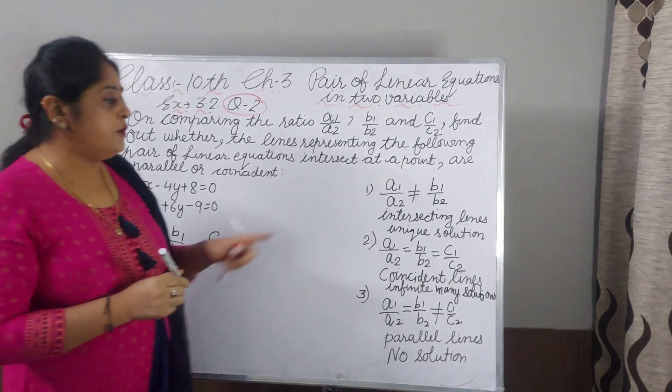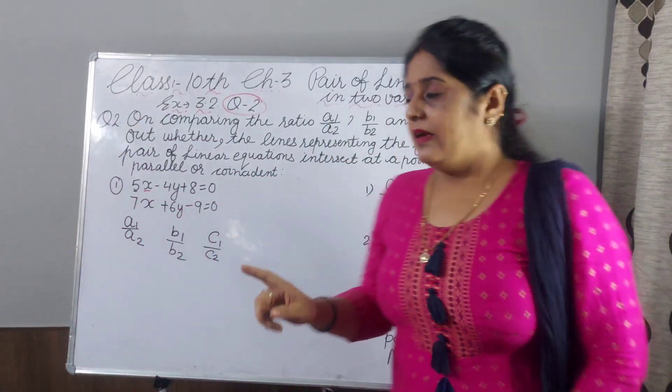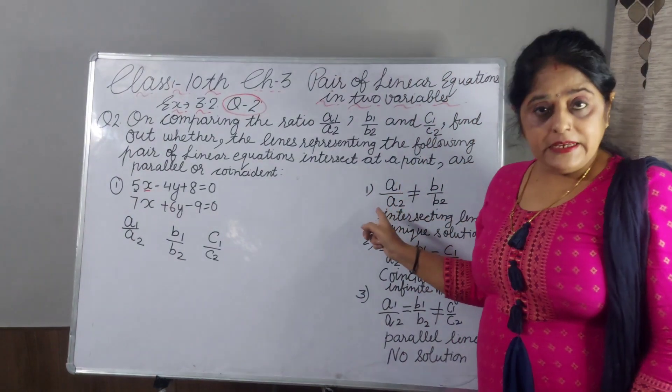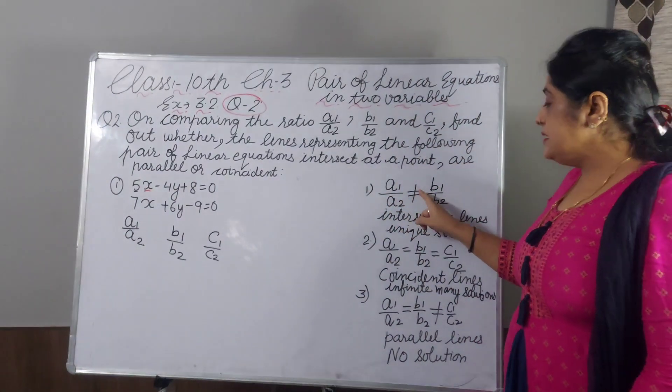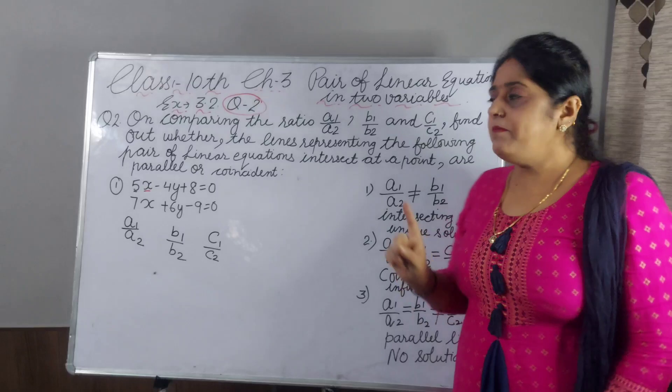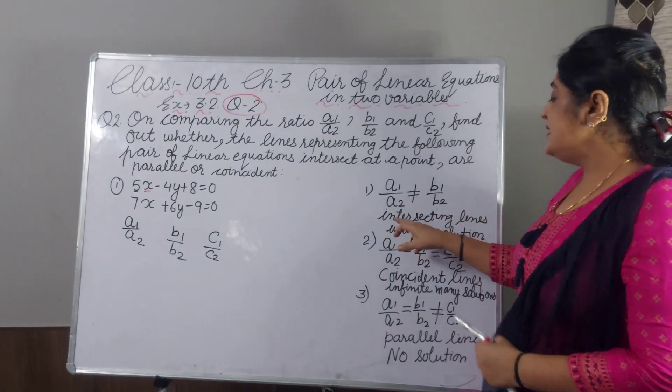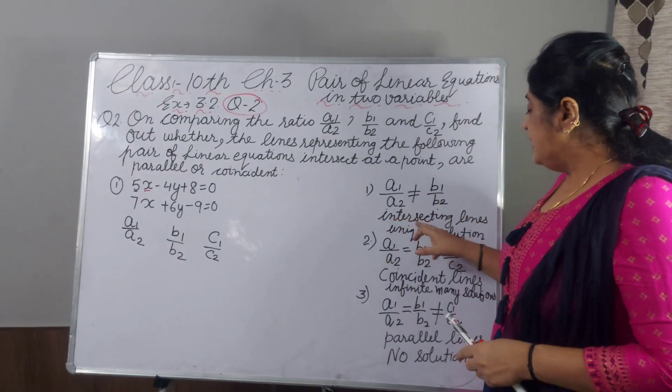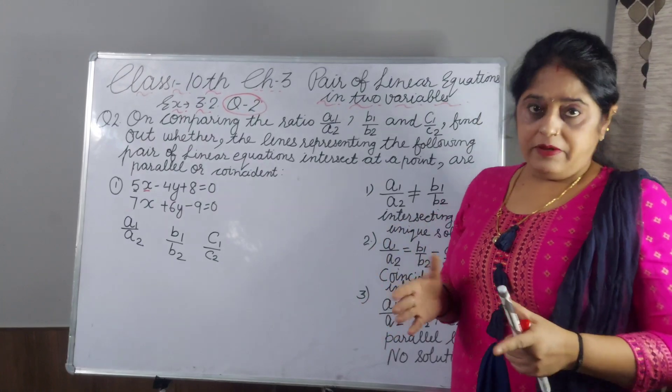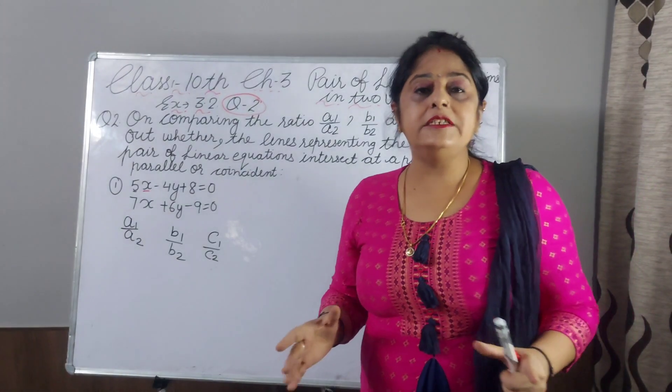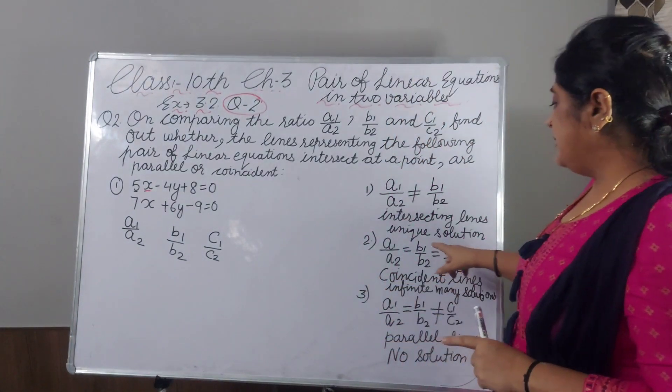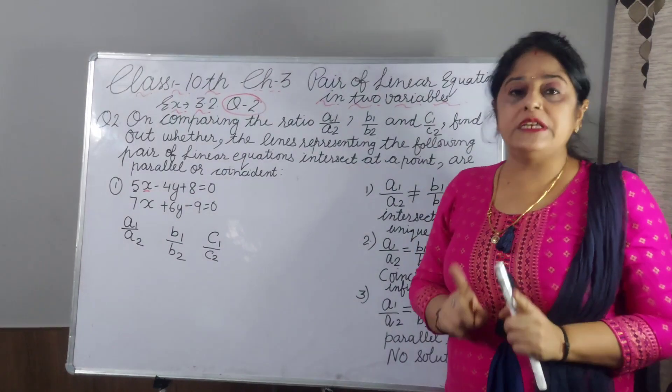And you have to remember this: if A1 by A2 is not equal to B1 by B2, then these lines are intersecting lines in graph. In graph, the lines will intersect each other. But algebraically, there will be unique solution.